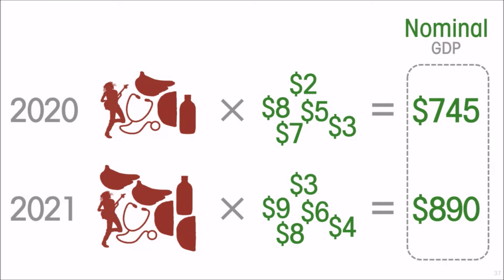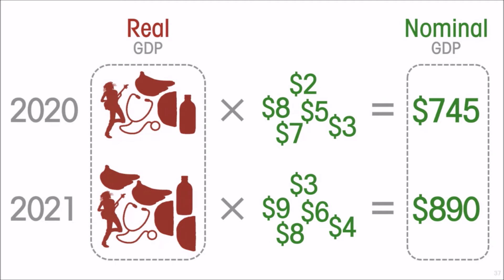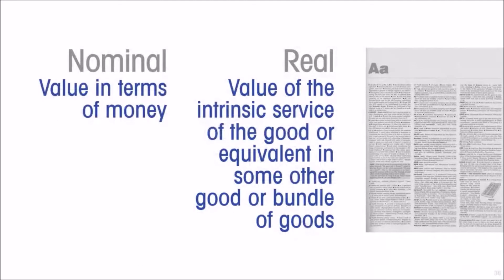Measuring GDP in that way — those money amounts of GDP — is called nominal GDP. But if we found a way to measure and add up the actual quantities of goods and services produced in each year, that would be real GDP. So nominal is to express a value in terms of money; real is the value of the intrinsic service of the good, or its equivalent in some other good or bundle of goods.